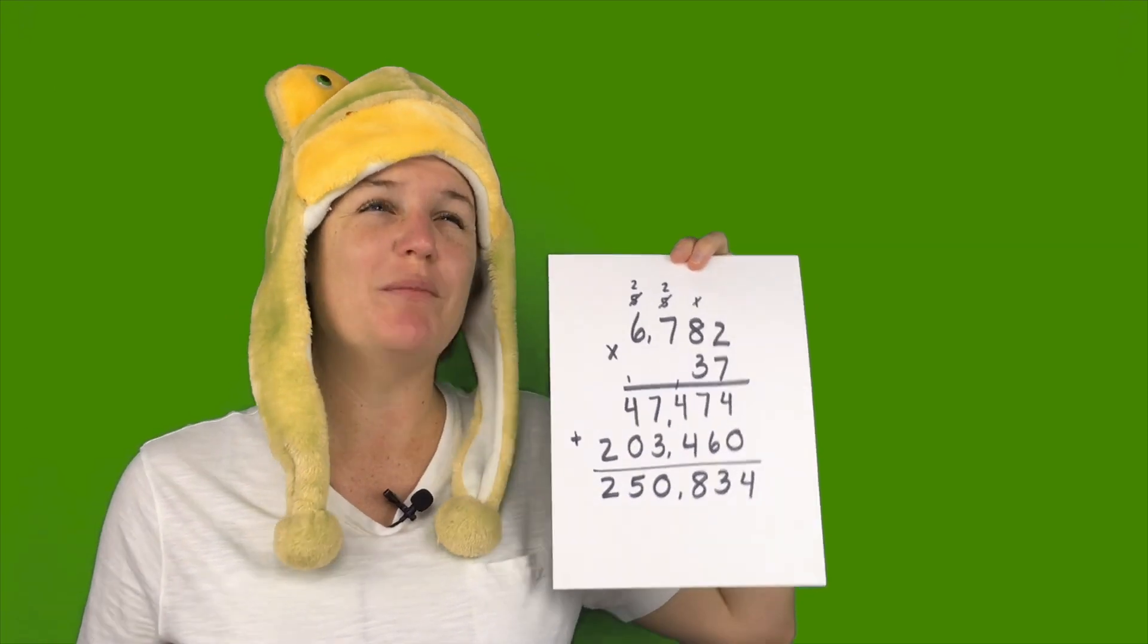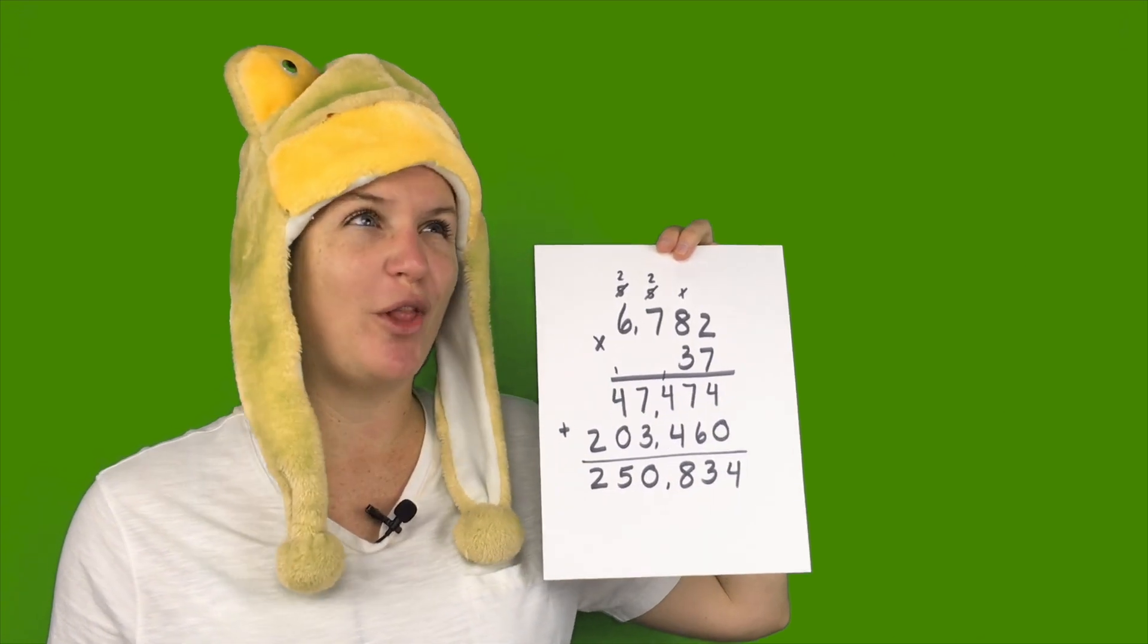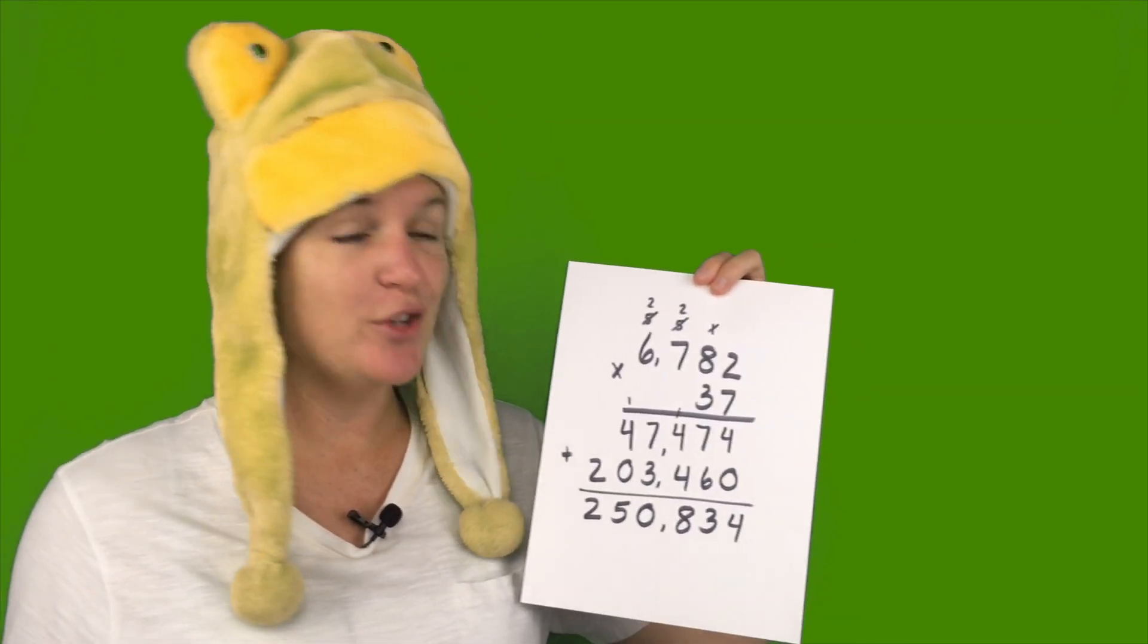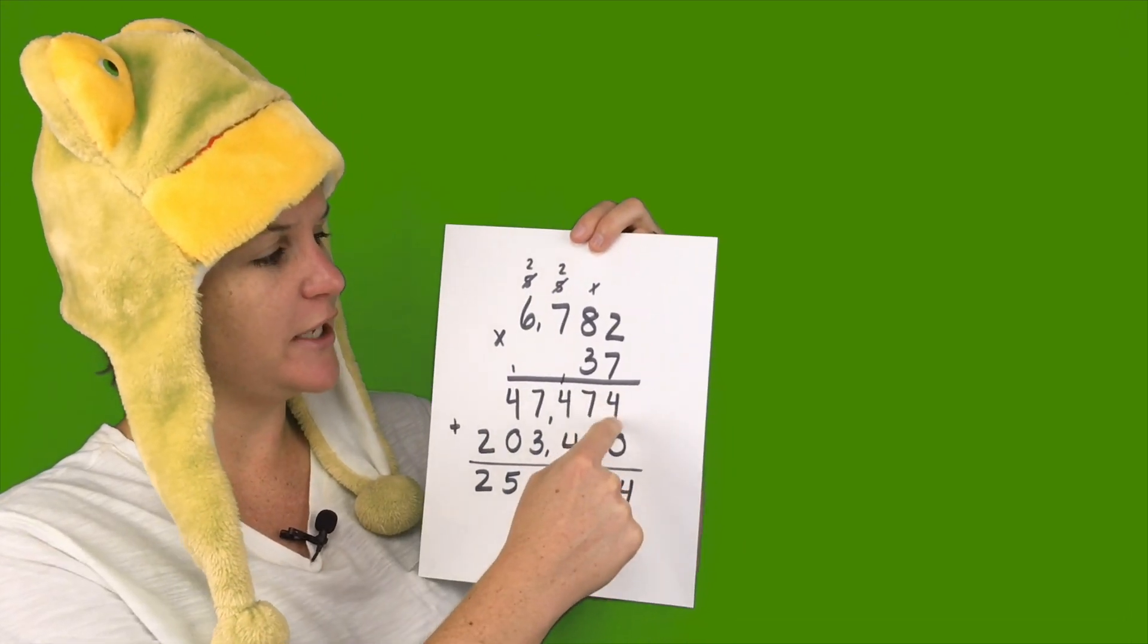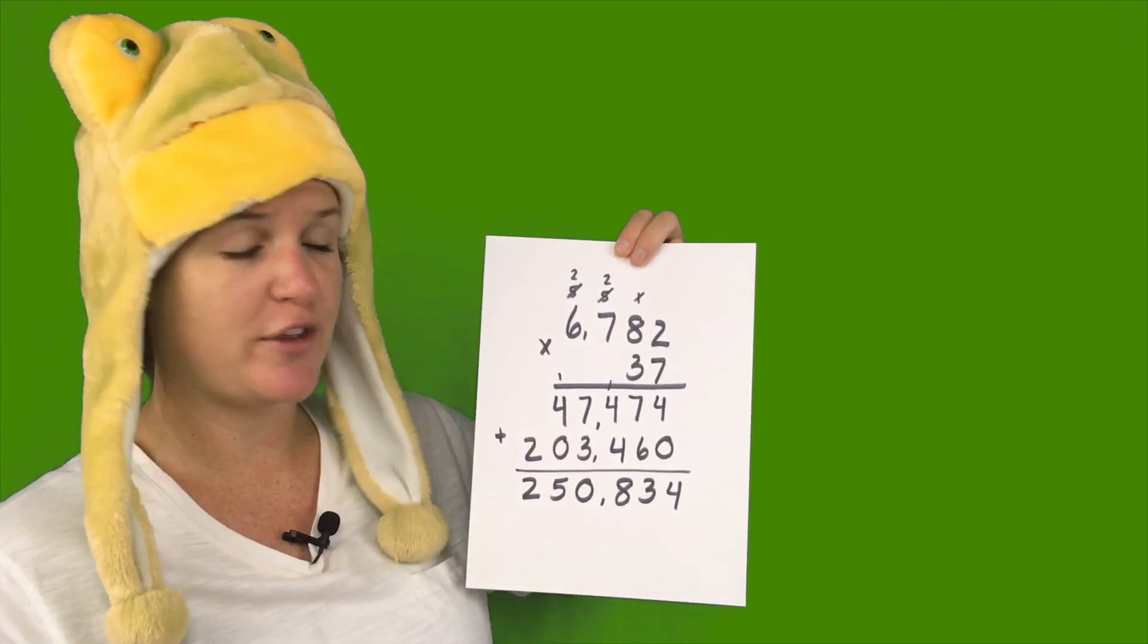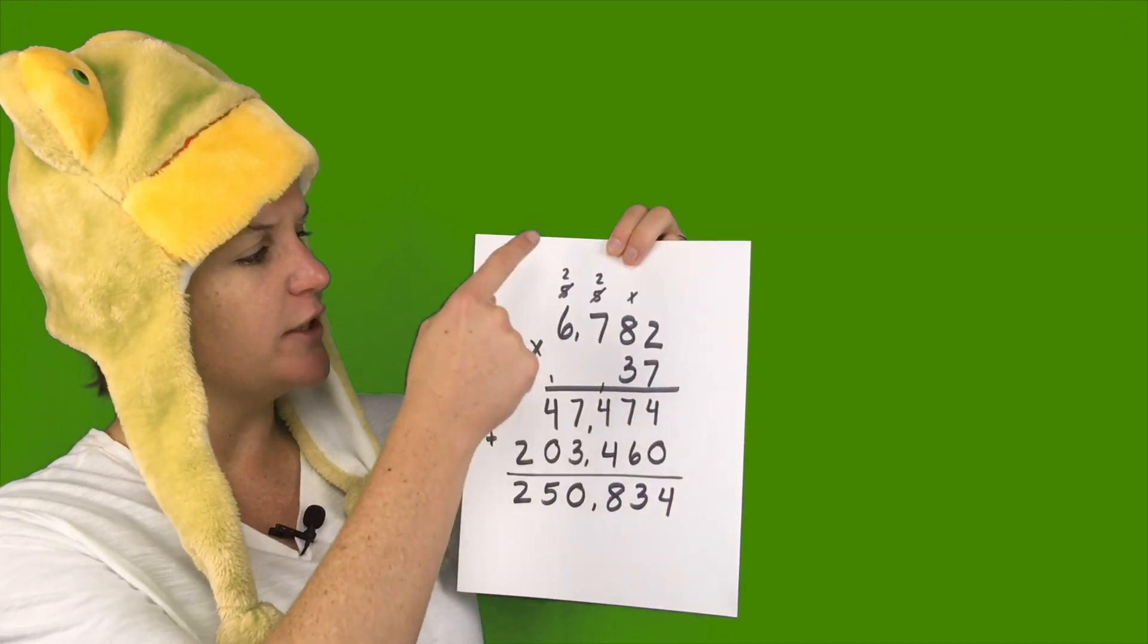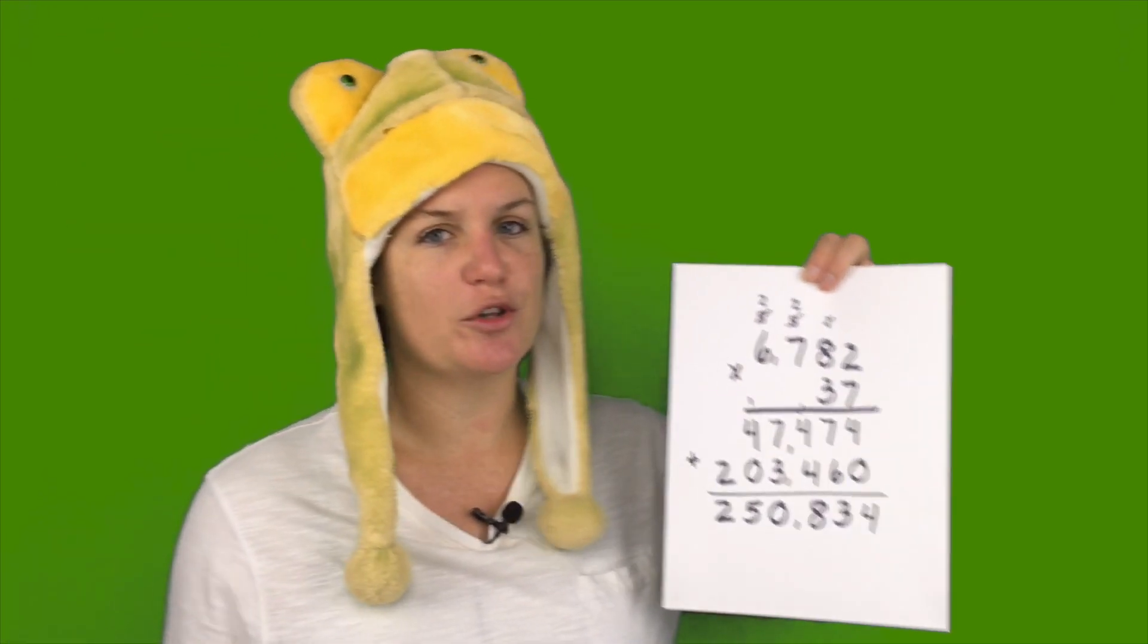So while reading this problem, I kind of wondered if a frog could set off a home alarm. Anyway, so I multiplied these two numbers together to get my answer. Here's what I did. I did 7 first. So 7 times 2 is 14. Bring down the 4. Carry the 1. 7 times 8 plus 1 is 57. 7 times 7 plus 5 is 54. So 5 and 4. And 7 times 6 plus 5 is 47. And then I crossed all these numbers out to make sure that I regrouped. I got rid of all that not to confuse me because sometimes I get confused.